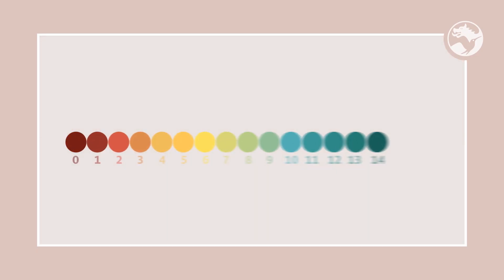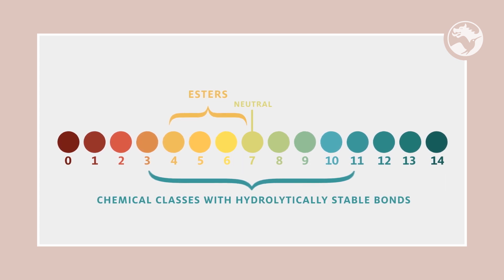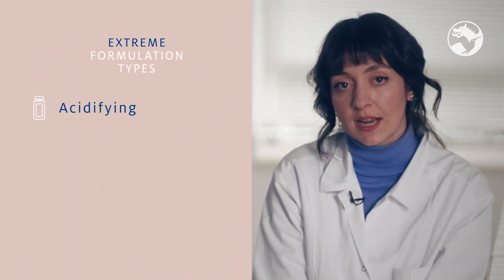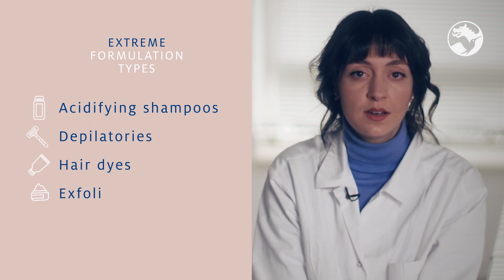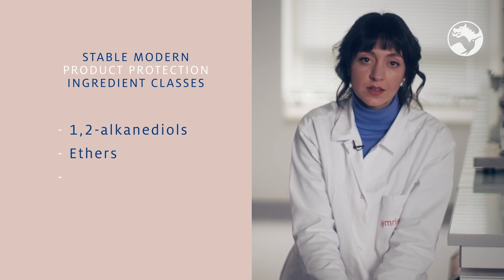The pH values and changes occurring throughout the formulating and manufacturing process do not only affect ingredients with carboxylic groups. Hydrolytically less stable chemical classes may lose their efficacy below or above neutral pH values due to hydrolysis — a transformation of the molecule into something totally different and usually ineffective as an antimicrobial. Esters, for example, have a narrow stable pH range of around 4 to 7. On the other hand, chemical classes with hydrolytically stable bonds can be used in a wide pH range, including values encountered in processes for all but the most extreme formulation types like acidifying shampoos, depilatories, hair dyes, and exfoliating creams. Such stable modern product protection ingredient classes include 1,2-alkanediols, ethers, and aromatic alcohols.